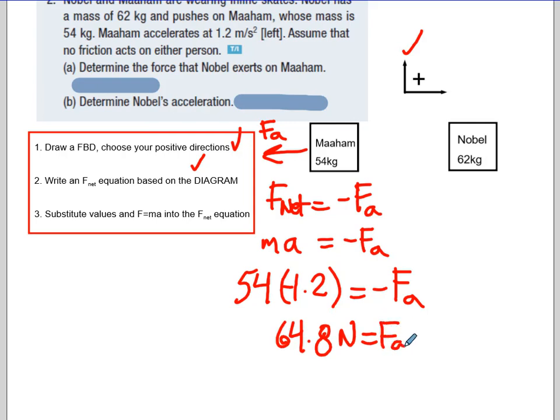So determine the force that... There's the force. We got 64.8. Book has 65. We have a negative or an FA pointing to the left. I should actually write that in. That's left. So this is left.